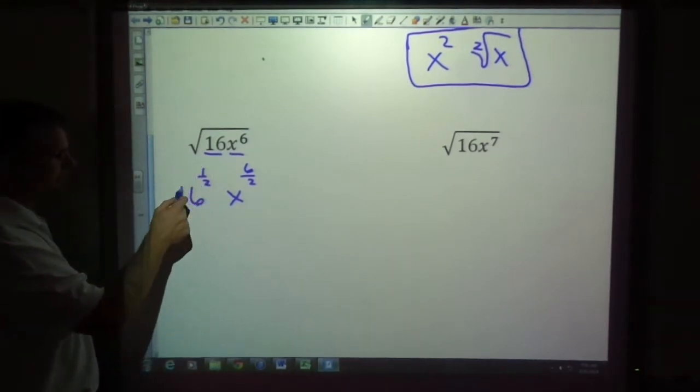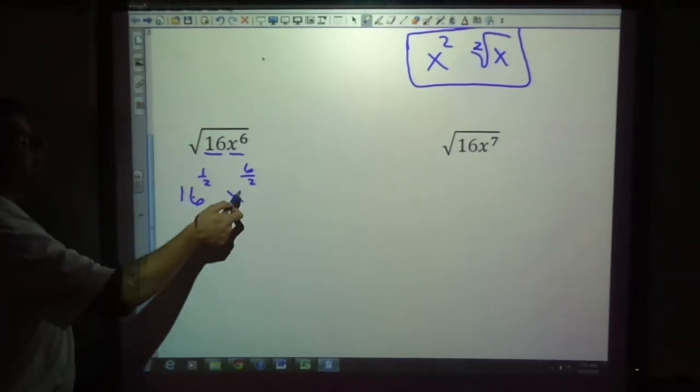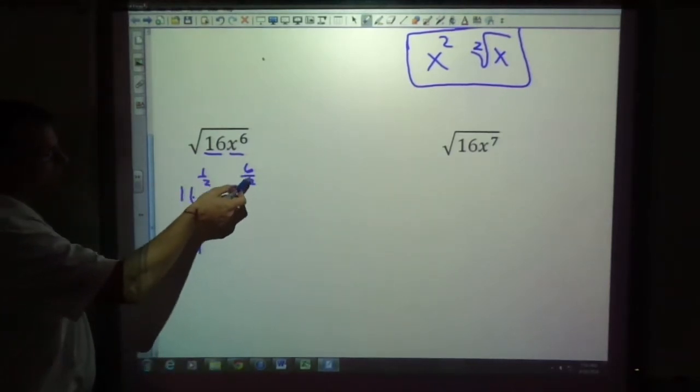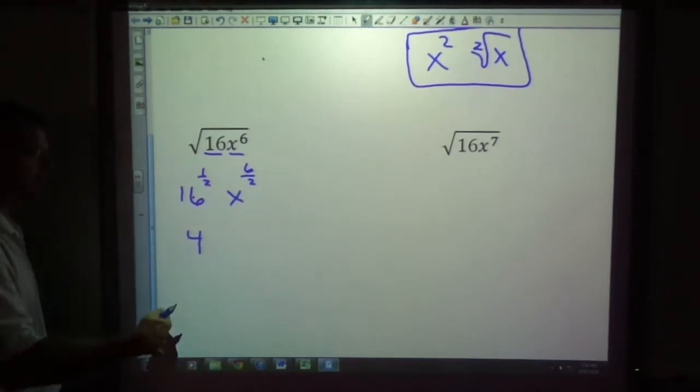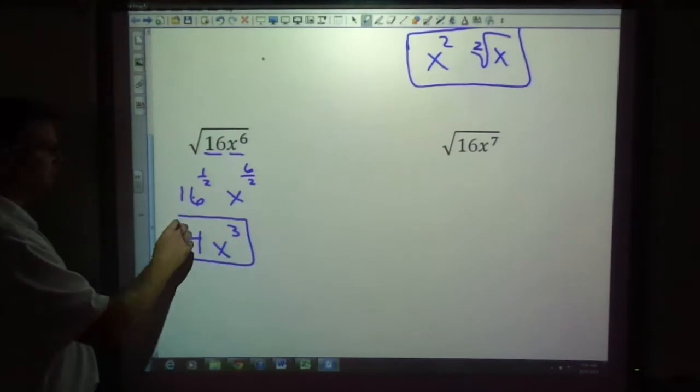We know what 16 to the one half is. That is the square root of 16. That is four. And we know what x to the six over two power is because six divided by two is three. When it works out nice and evenly, we can just put four x to the third.